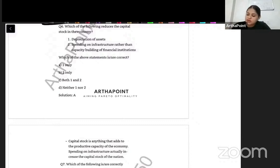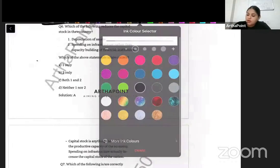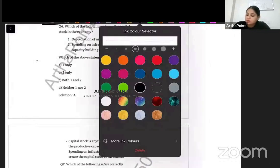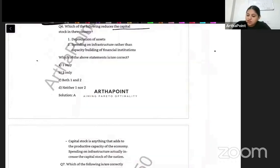Okay, let us have a look at this question. Which of the following reduces the capital stock in an economy? Depreciation of asset, spending on infrastructure rather than capacity building. And it says 1, 2, 1 and 2, neither 1 and 2. But how does capital stock come?